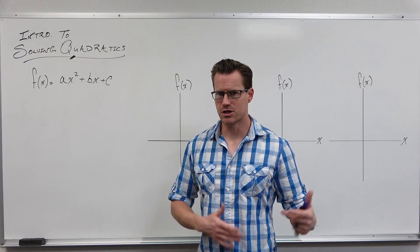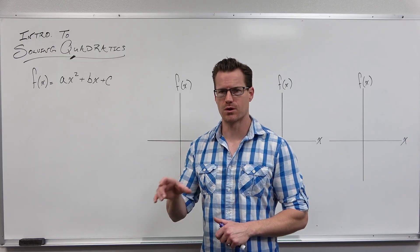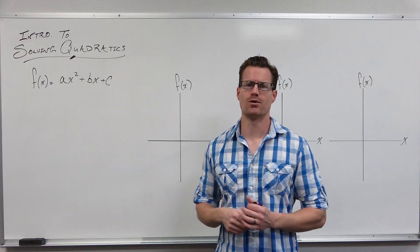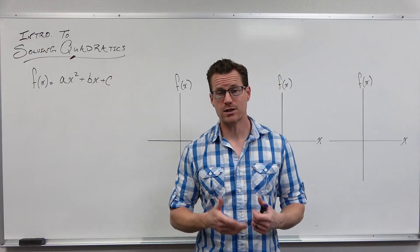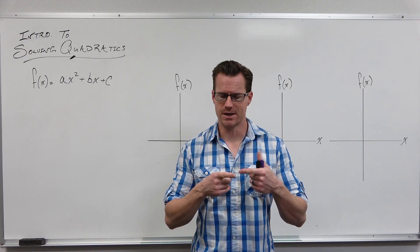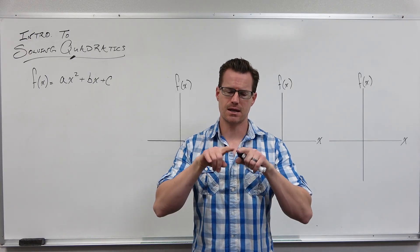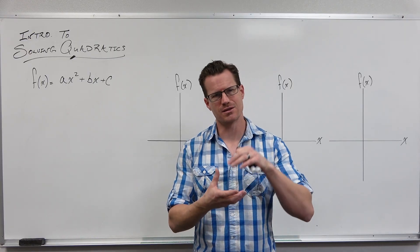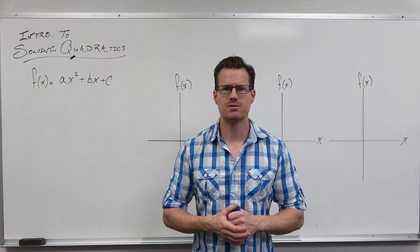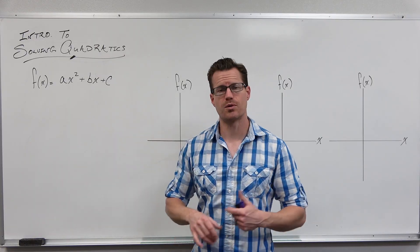A quadratic function is a polynomial where the largest power is 2 — the degree is 2. In general, all of these make some sort of parabola. If a is positive it opens upward; if a is negative it opens downward. It also tells us the stretch or compression. But in general, all of these things are parabolas.